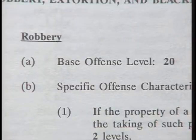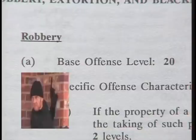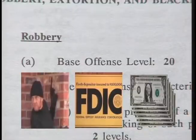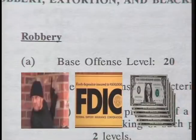The Commission describes the guidelines as basically a charge offense system with a number of real offense elements. This means that the guidelines first assign base offense levels to the specific crimes the defendant has been convicted of, then call for the court to adjust the offense levels by factoring in certain frequently occurring real offense behavior, such as that occurring in our hypothetical case. To do that, the court must look at behavior other than that falling within the elements of the charge of conviction. Introduction of these real offense elements creates the need for more fact-finding at sentencing.